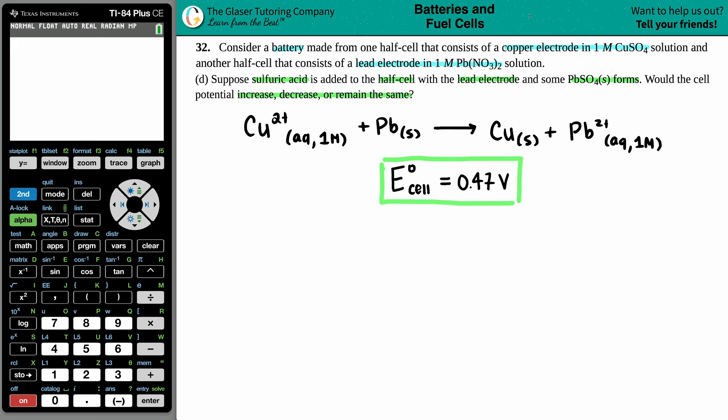Okay. And maybe I'll highlight would the cell potential because that's basically what we're asking for. So a couple of things here. In previous letters, right, in letter A of this question, we did find out what the standard cell potential is. For this case, it's 0.47 volts.